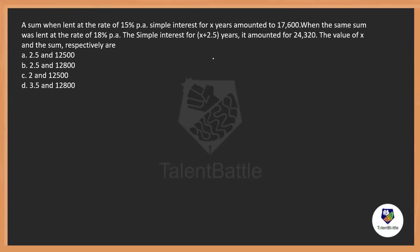Try to stop the video and practice it. If you did not get it, watch it again. Now let's see the next question: A sum lent at 15% per annum simple interest for X years amounted to 17,600. When the same sum was lent at 18% per annum, the simple interest for 2.5 years amounted to 24,320. The value of X and the sum respectively are?